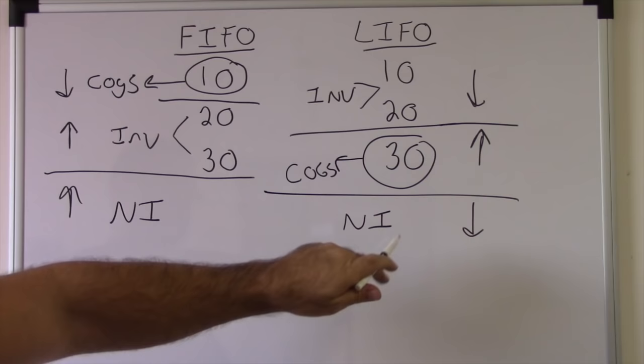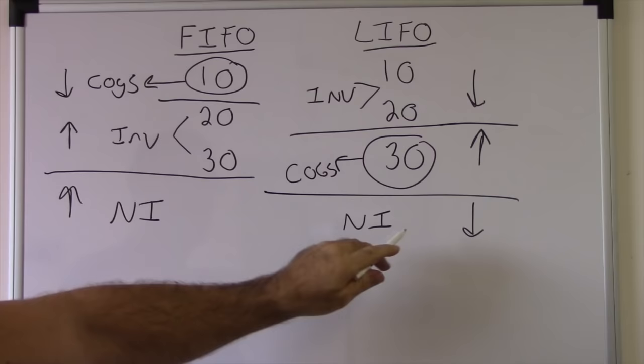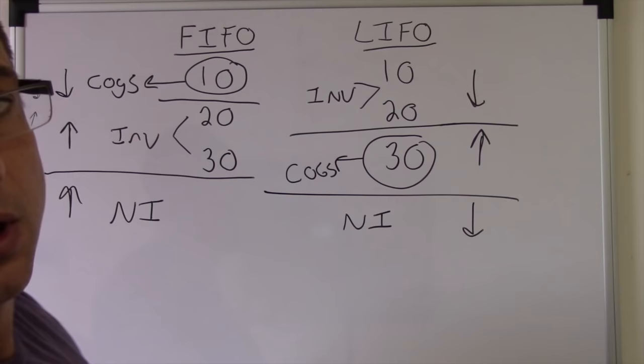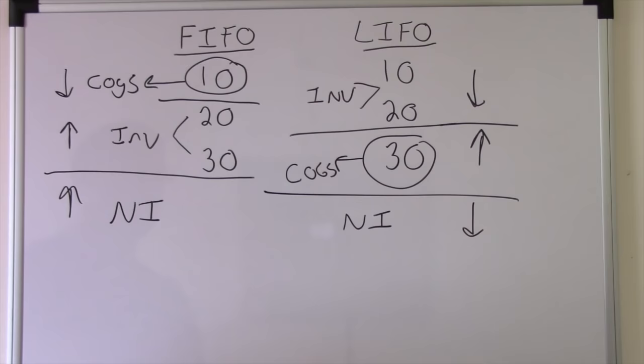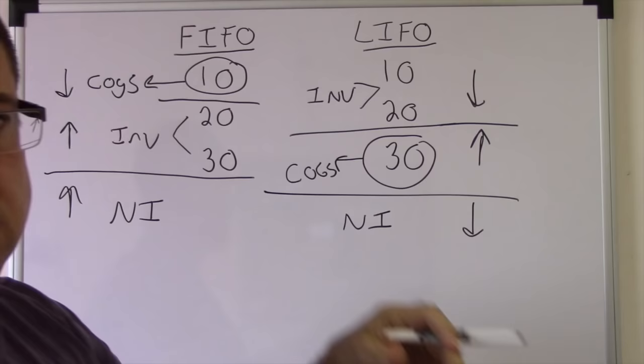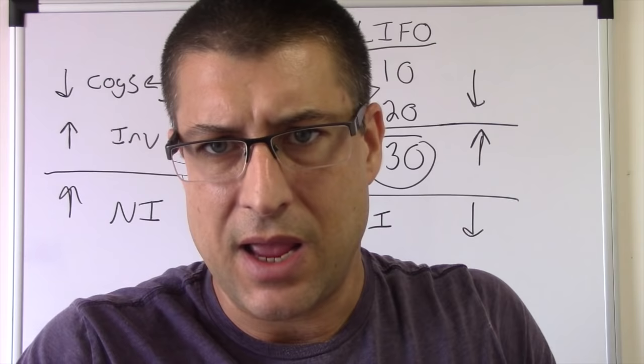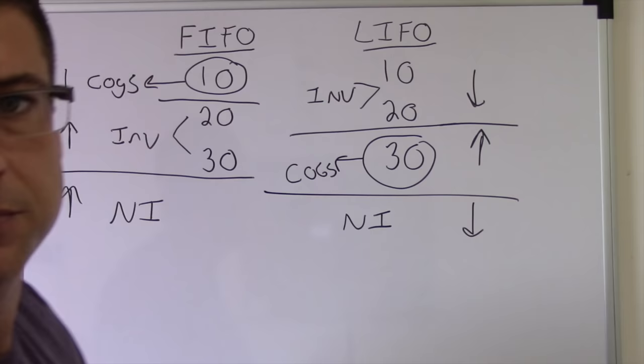So you would think everyone would just do this, right? Because your income's lower, that means you're going to pay less taxes. But really, if you think about it, last in first out doesn't really make sense. You're saying the last thing in just came off the truck, and that's the first thing you sell. What about the stuff that's already on the shelf? But anyways, we're not going to get into that.